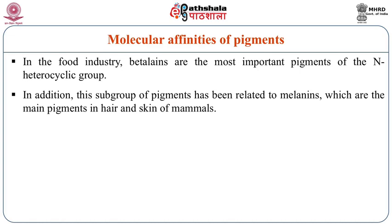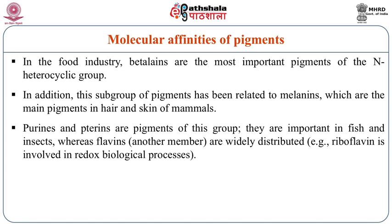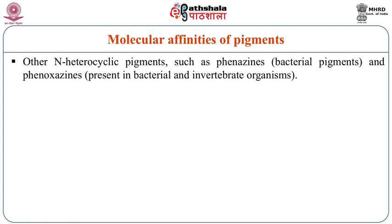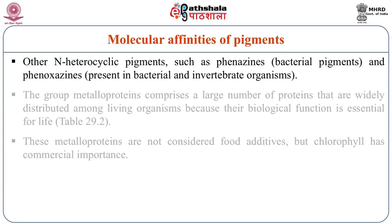This subgroup of pigments has been related to melanins, which are the main pigments in the hair and skin of mammals. Purines and pterines are pigments of this group and they are important in fish and insects, whereas flavins are widely distributed. Interestingly, some marine invertebrates are pigmented by riboflavin. The same is true for several bacteria also. Other n-heterocyclic pigments such as phenazines and phenoxazines are also present and are being used as different pigment sources for colouring foods.